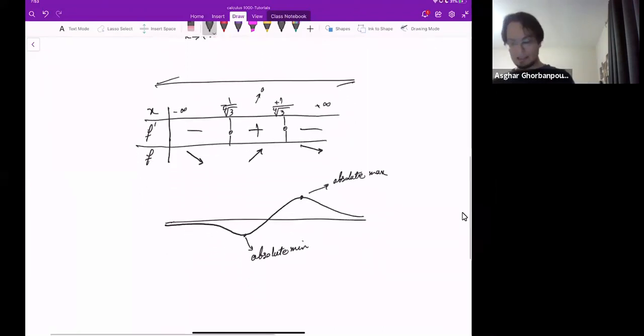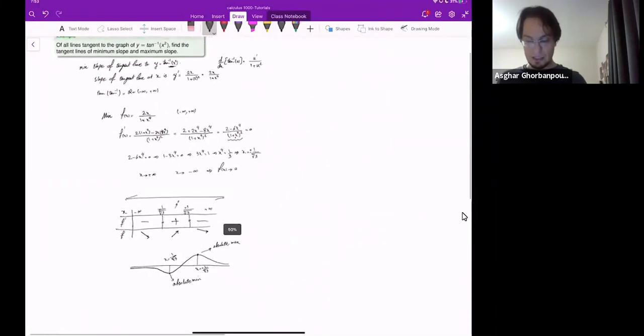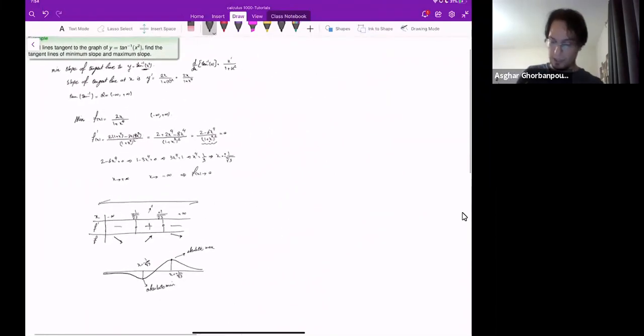And where does that occur? When x is plus 1 over the fourth root of 3, and when x is negative 1 over the fourth root of 3. And that is where the maximum slope of the function - by the way, you can plug in these guys there at f.